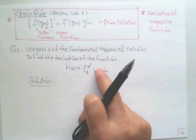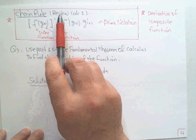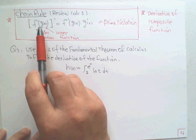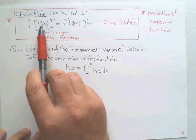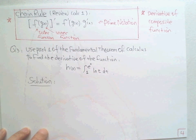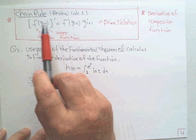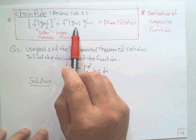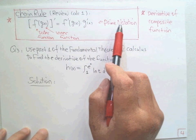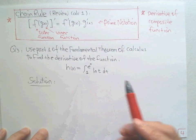For the next example, we need to use the chain rule from Calc 1. For the composite function f(g(x)), the chain rule tells us: the derivative of the composite is the derivative of the outer function times the derivative of the inner function. Remember this prime notation — it's very important in Calc 1.